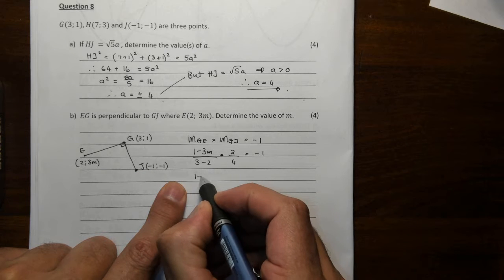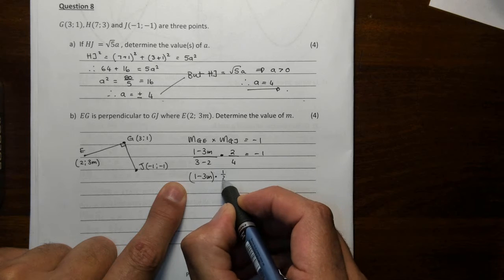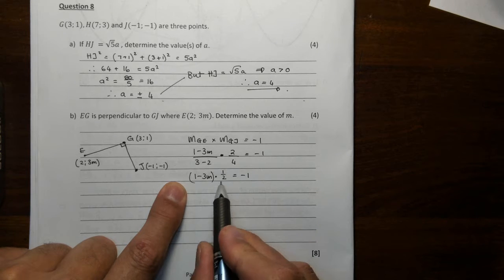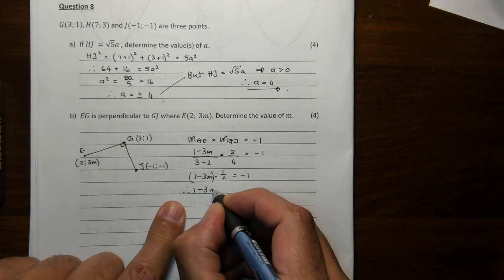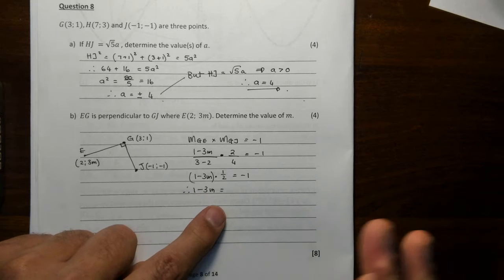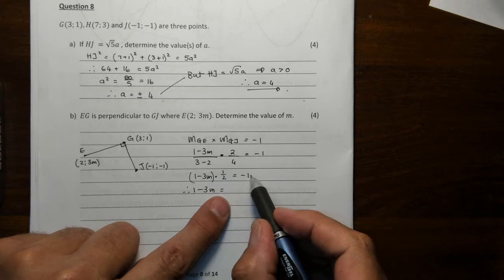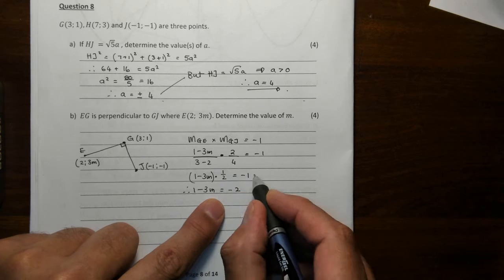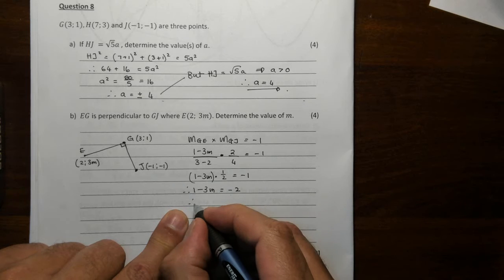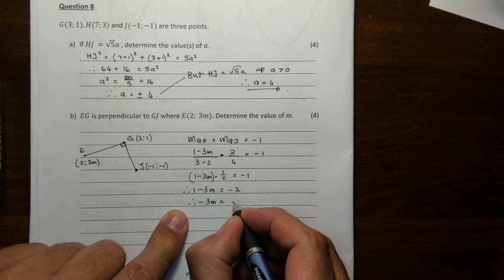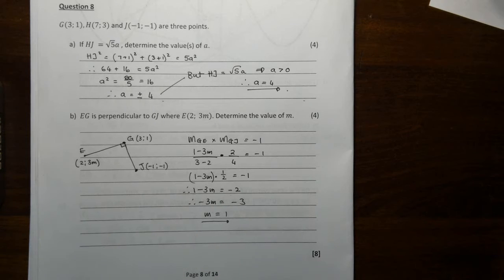Let's just clean up a bit here. 1 minus 3M multiplied by 1 over 2 is a half, is equal to minus 1. I'm just going to multiply that 2 away. So I get 1 minus 3M. The rest now is just doing arithmetic and solving for M. 2 goes across by multiplication. I throw this one over. Minus 3M becomes minus 3. It's minus 2 minus 1. So M is indeed 1.